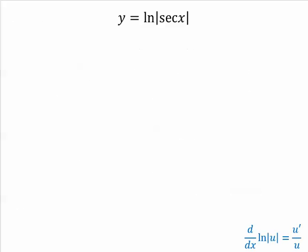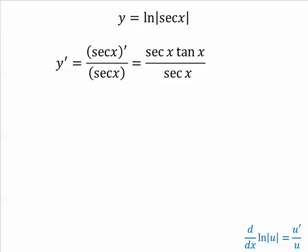Now we have a problem here that involves the absolute value. It's going to be the same thing, u prime over u. U is equal to secant x. So the derivative of y will be u prime over u, derivative of secant over secant. Derivative of secant is secant tangent. Notice how the secants cancel, and I get tangent.